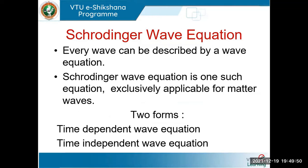Whenever you have a wave in a given system, it can be explained using some equation. For example, a simple harmonic wave can be written as y = a sin(ωt). In the same fashion, for matter waves we also need some equation which can describe the nature of the matter wave. Schrödinger undertook this task and developed an equation for matter waves, which is named the Schrödinger wave equation.